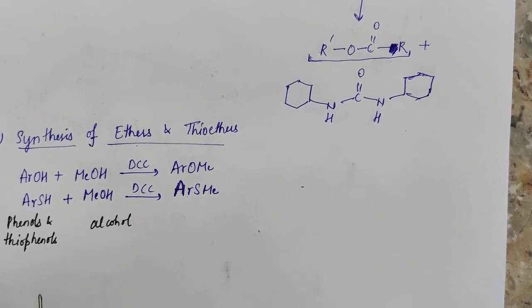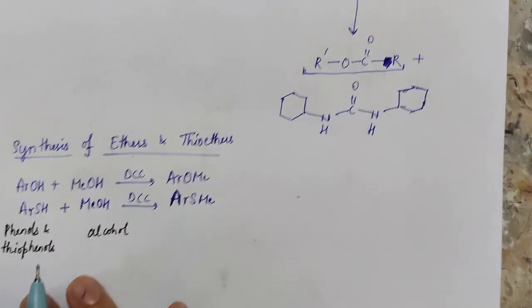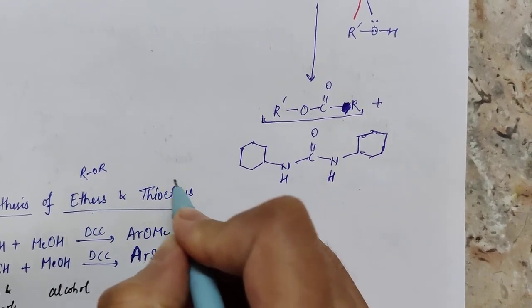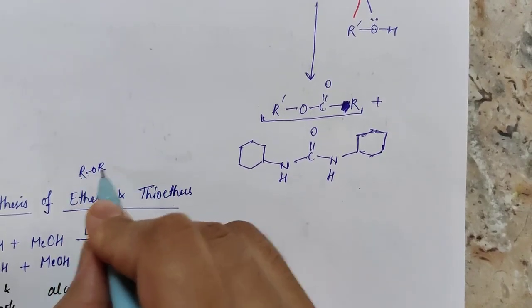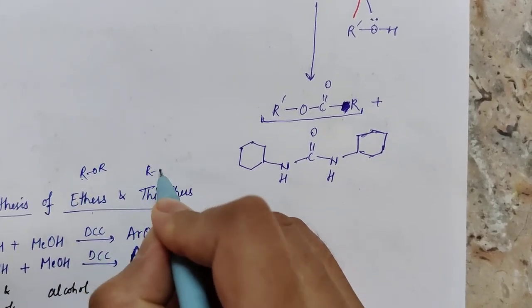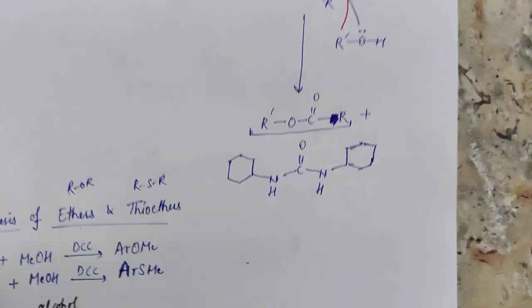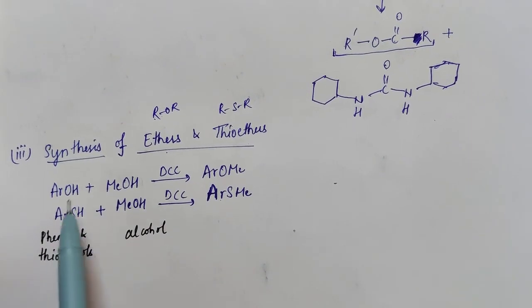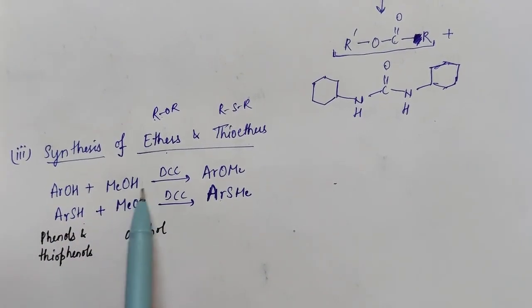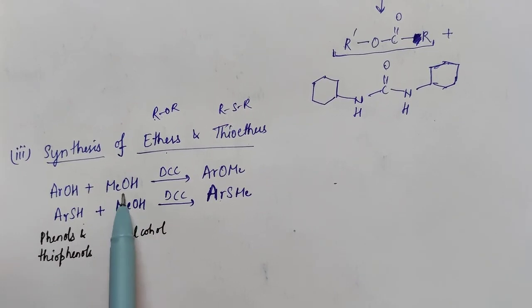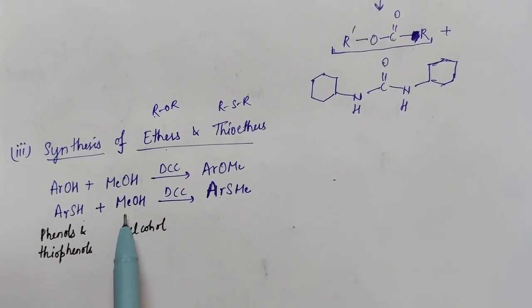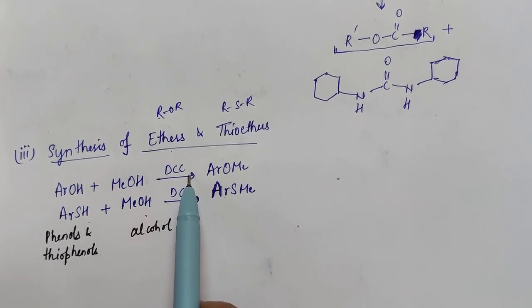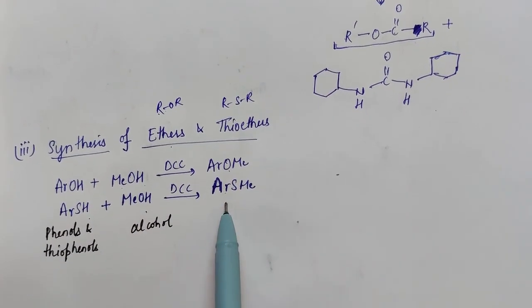The third reaction involves ether and thioether synthesis. Ethers are R-O-R and thioethers are R-S-R. A phenol or thiophenol reacted with a primary alcohol — in this case methanol — in the presence of DCC gives an ether or thioether.